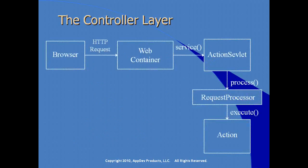Visually, what's happening in a Struts application: a request comes into the web container, the service method runs on the action servlet, which becomes the single point of entry. The action servlet and request processor work together to determine which action needs to be executed based on the incoming request. The action is associated with a view, so if a particular action is requested, the framework knows which JSP needs to be executed.